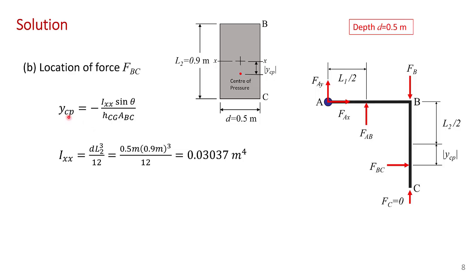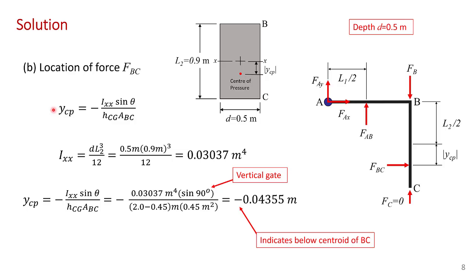So now we can make the substitutions into this expression to get YCP. Here's the second moment of area we just calculated, the sine of 90 degrees because we have a vertical gate. The depth of the centroid of the center of surface BC, as we discussed before, is 1.55 meters.